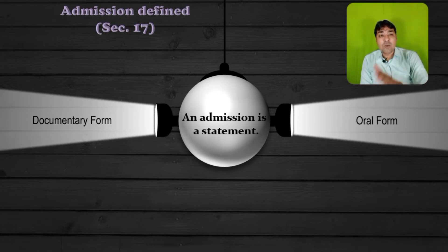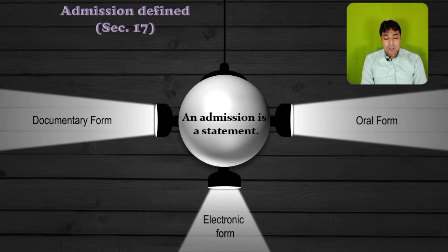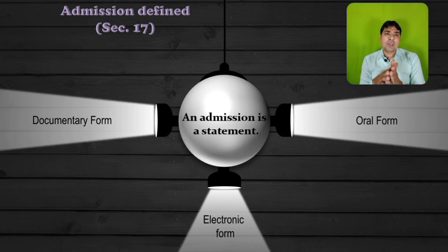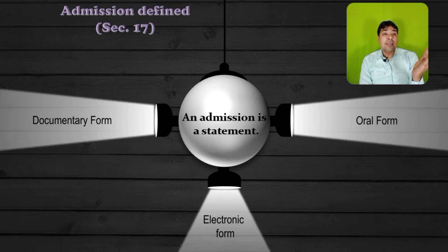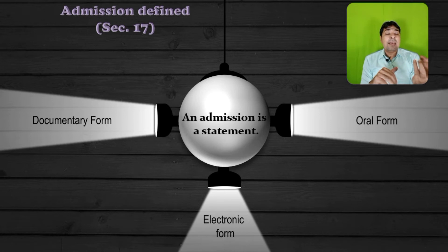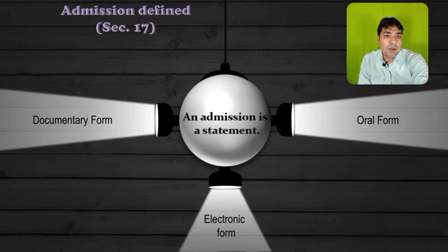Admission may be in oral form, documentary form, or electronic form. An oral admission is a statement such as saying 'I was at that place at that time.' A documentary admission arises when a signed document acknowledges a fact. An electronic admission could be an email in which a fact is admitted. So admission can be oral, documentary, or electronic.